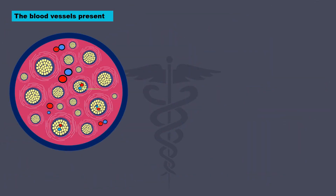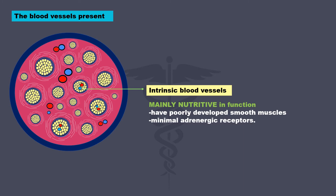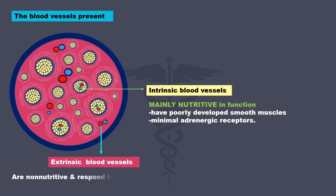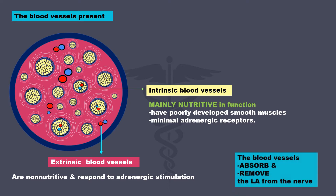The blood vessels present are intrinsic blood vessels that are present within the fascicle. They are mainly nutritive in function and have poorly developed smooth muscles on their wall with a minimal number of adrenergic receptors. The extrinsic blood vessels, as you can see in the image, lie outside. They are non-nutritive and respond to adrenergic stimulation. The blood vessels absorb and remove the LA from the nerve.